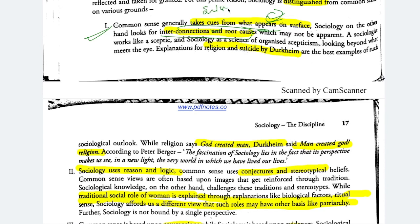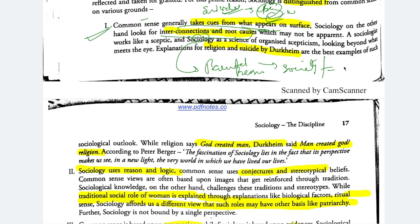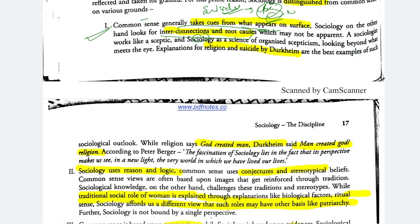For example, if someone has attempted suicide after failing UPSC, common sense will say it was due to failure. But sociology looks at interconnections and root causes: why did people attempt suicide? Parental pressure — because society's norms and values place UPSC on a high pedestal. Parents ingrain this in children's minds and release their pressure on them, and children who can't qualify may attempt suicide. Sociology uncovers these root causes.